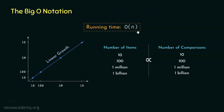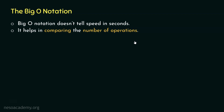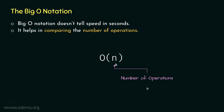But why haven't we mentioned time in seconds? The reason is pretty simple: Big O notation does not tell speed in seconds. It helps in comparing the number of operations. So it tells the number of operations, not the speed in seconds. In O(N), N represents the number of operations — not exact time. That is why we never mention speed in seconds when describing running time with Big O notation.